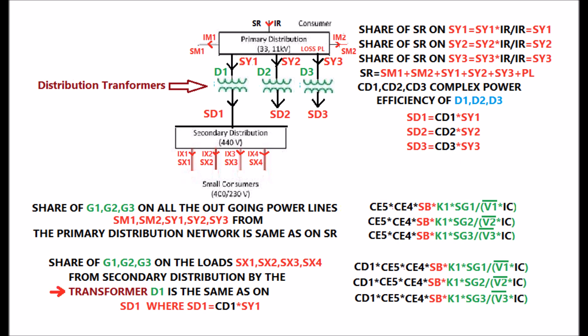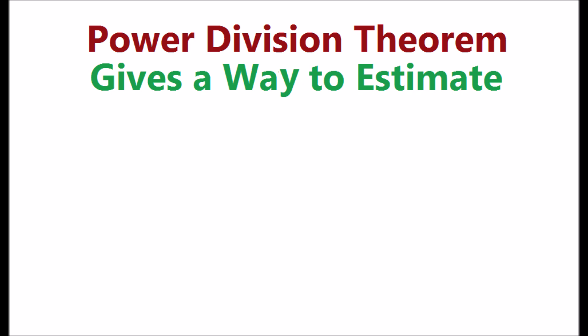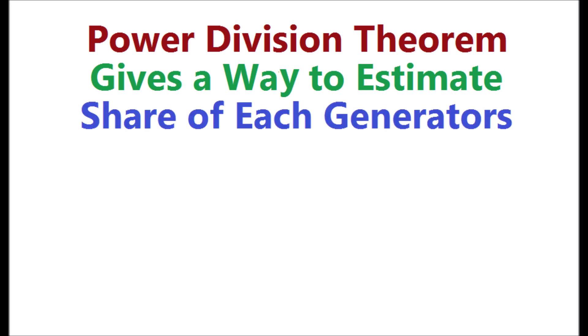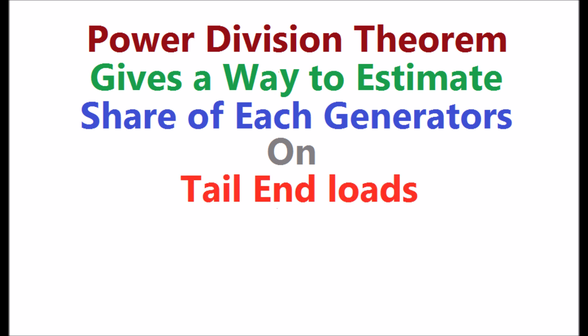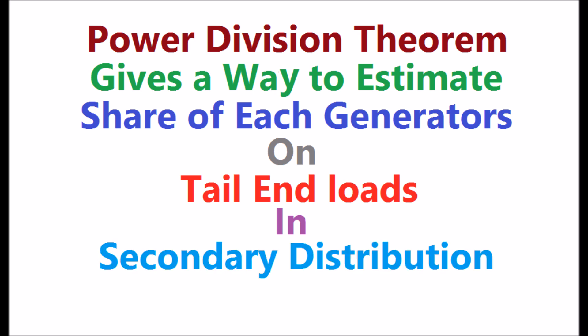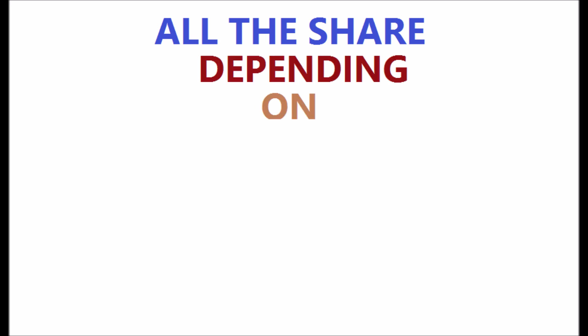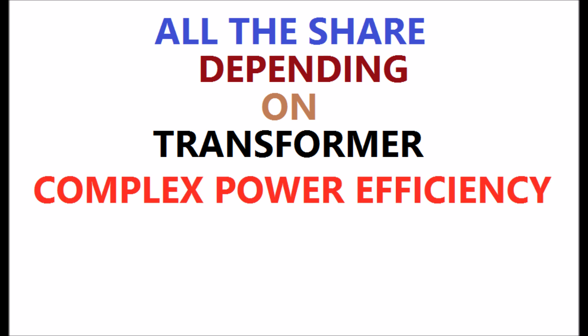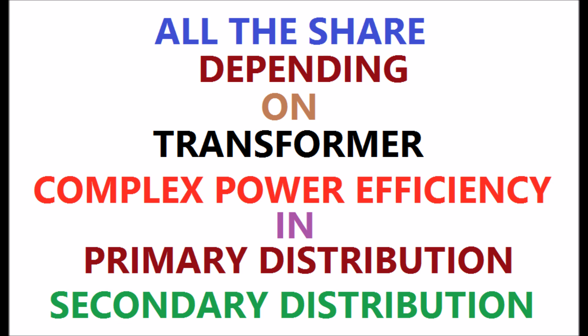As an example, for transformer D1, the share of G1, G2, G3 on loads Sx1, Sx2, Sx3, Sx4 are shown in the display. The conclusive remarks: the Power Division Theorem gives a way to estimate the share of each generator on tail end loads — that is, in the secondary distribution. The research shows all the shares depend on the transformer complex power efficiency, in both the primary and secondary distribution.